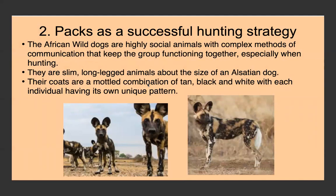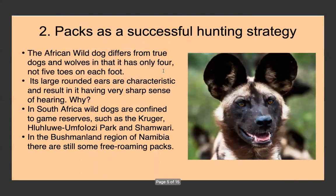African wild dogs are highly social animals with very complex methods of communication that keep the group functioning together, especially when hunting. They are slim, long-legged animals about the size of an Alsatian dog, with mottled tan, black, and white coats — each individual has a unique pattern. The African wild dog differs from true dogs and wolves because it only has four toes on each foot, and its large, round ears give it a sharp sense of hearing.